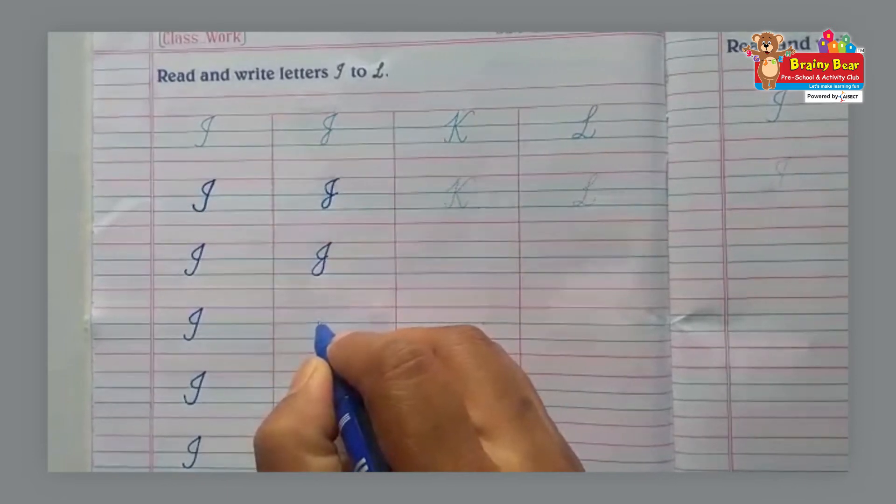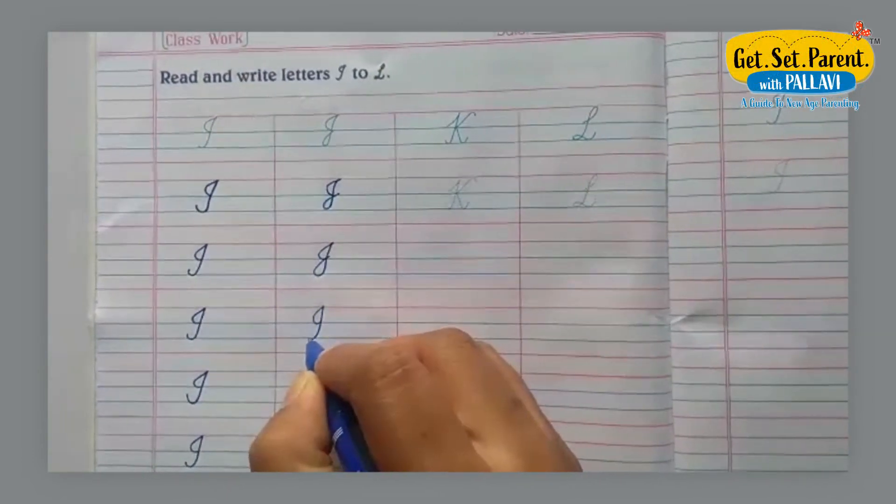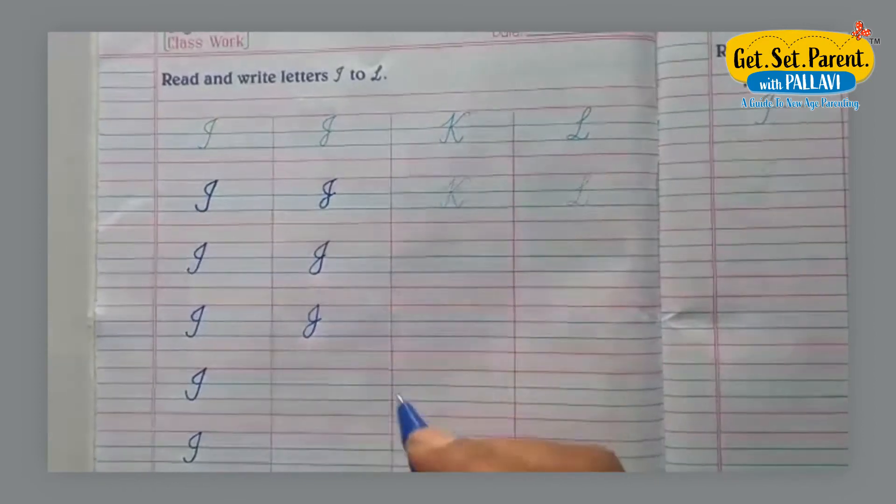First we have to make it like I. This and a small loop like this. This is J.